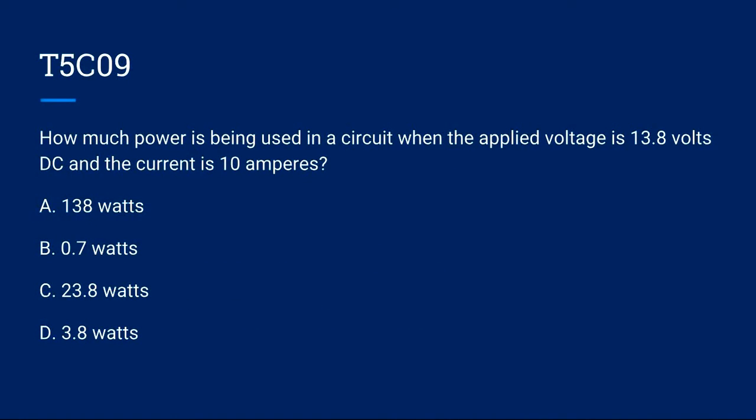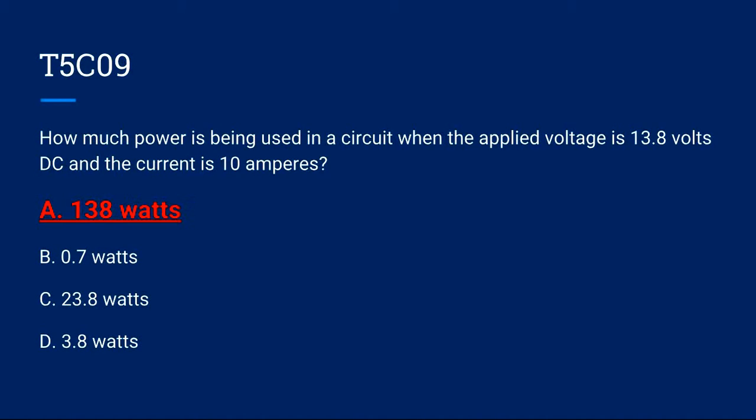T5C09: How much power is being used in a circuit when the applied voltage is 13.8 volts DC and the current is 10 amperes? A. 138 watts, B. 0.7 watts, C. 23.8 watts, or D. 3.8 watts. Correct answer is A. 138 watts.